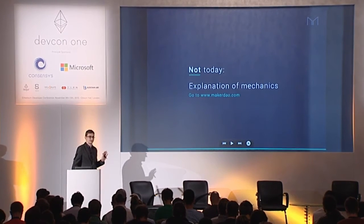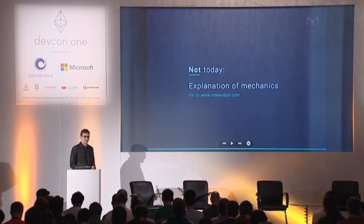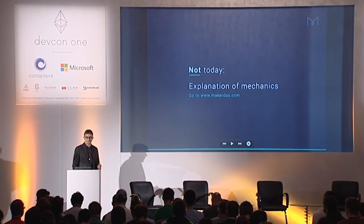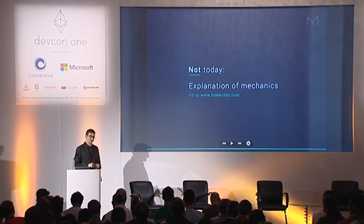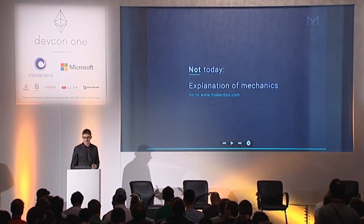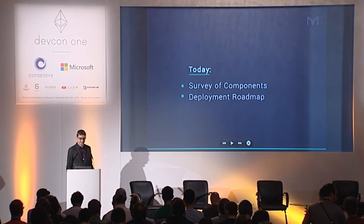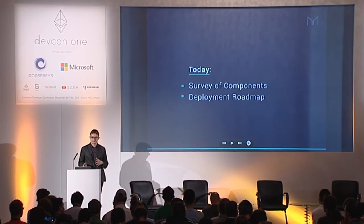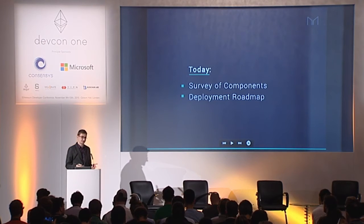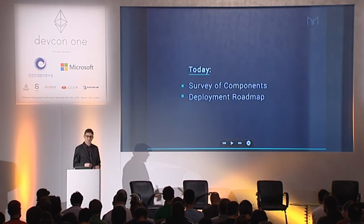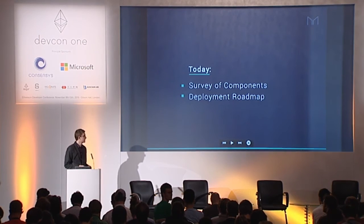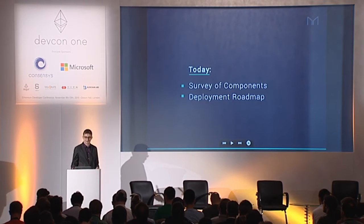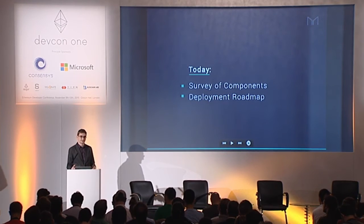This talk is not going to be about the actual stablecoin mechanics, because that is not appropriate for a 15-minute talk, and we have a great white paper dedicated to exactly that. So instead, today we're going to talk about what the white paper doesn't go into, which is how the actual contract system is designed — what are the different components — and also how we can go about deploying this contract system over time and start getting some utility out of it even before the whole thing is complete.